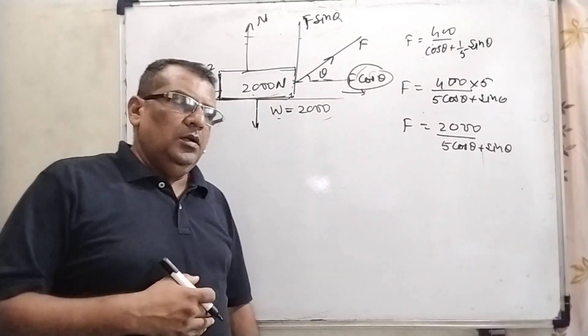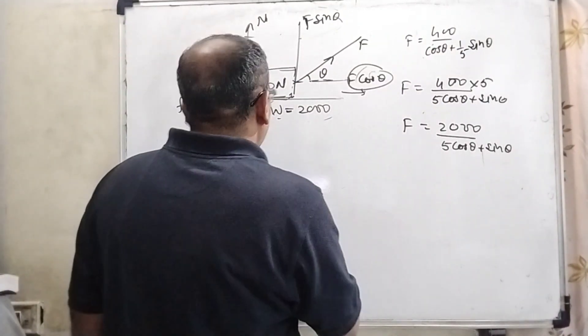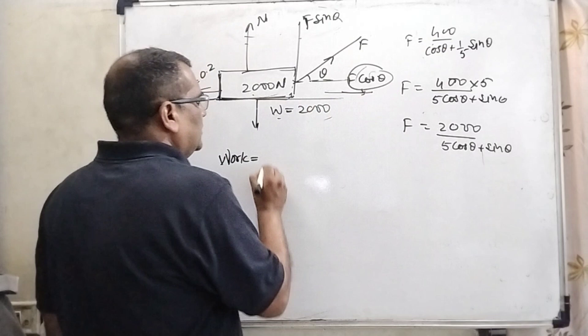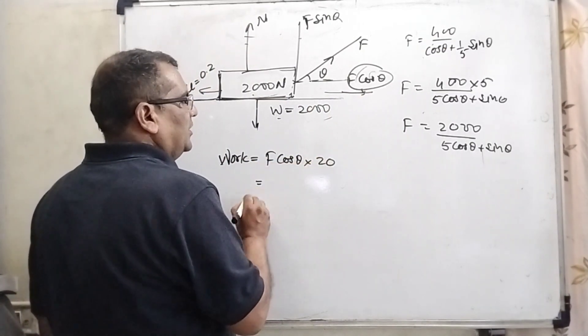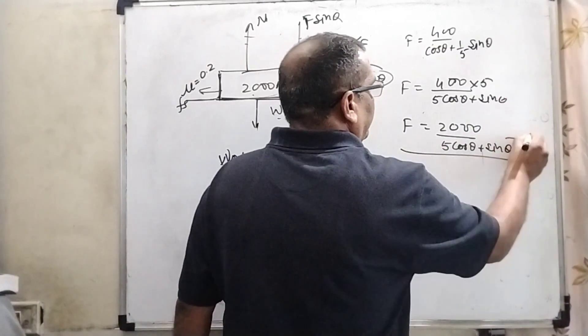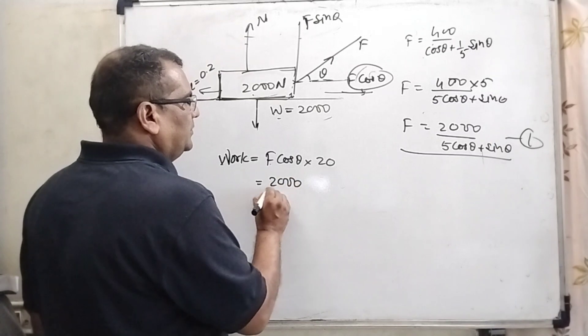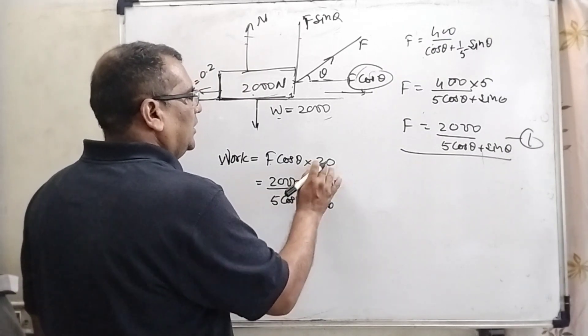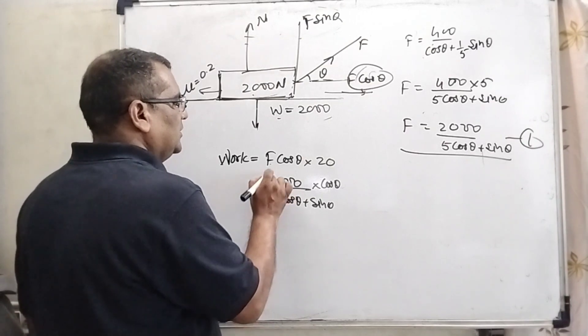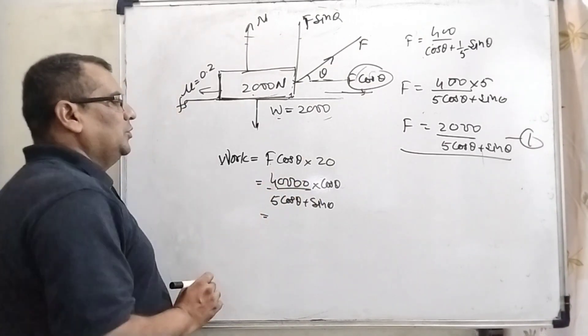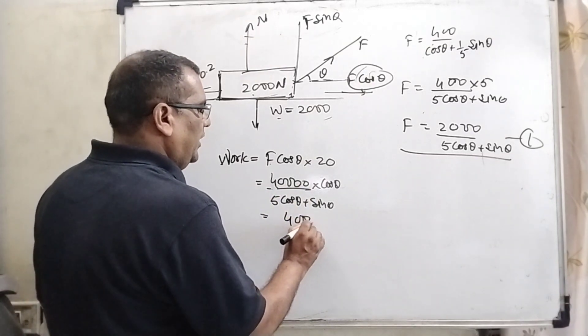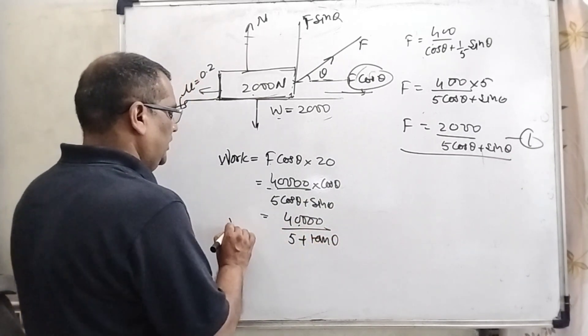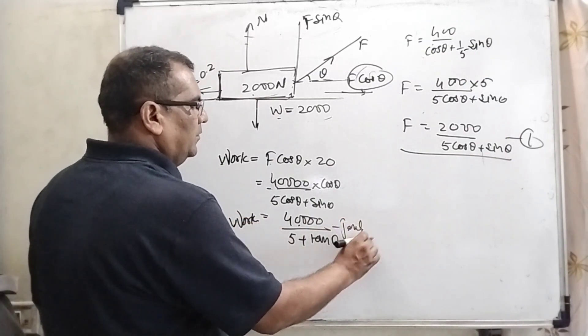F equals 400, taking the LCM, 5 cos theta plus sin theta. So F equals 2000 over 5 cos theta plus sin theta. Now we have to find the amount of work done. Work done equals force, which force? This dragging force F cos theta and displacement is 20 meters. Then F from this equation, we put the value. 20 into 2000 is 40,000. So divided cos theta in numerator and denominator. Then 5 plus tan theta. So work is 40,000 over 5 plus tan theta in Joules.